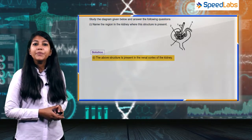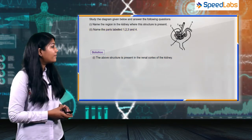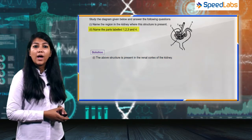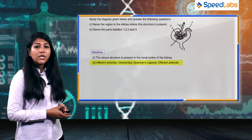Moving on to the second part of this question: we have to name the parts labeled one, two, three, and four. The first is the afferent arteriole.